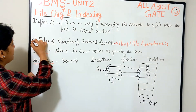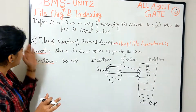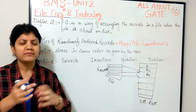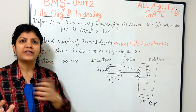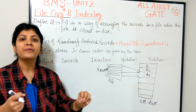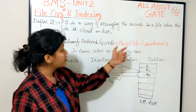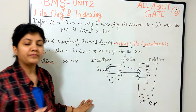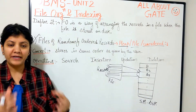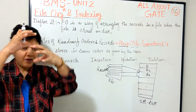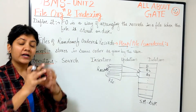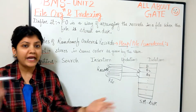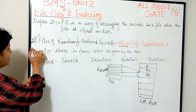Now let's go to the very first type of file organization, which is the simplest — files of randomly ordered records. Randomly ordered means there is no particular order; records are just put in as they are coming in. This is also known as the heap file or the unordered file. Heap means putting things one over another without arranging in a certain order, and unordered means the records are not ordered based on any field.